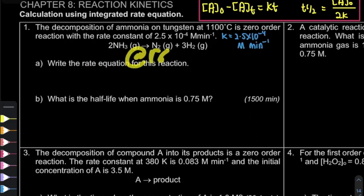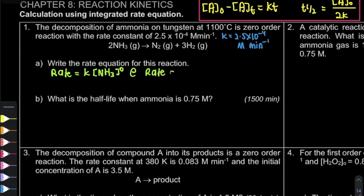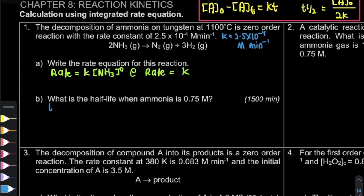Question A asks for the rate equation or rate law. Remember, it's actually a zero-order reaction, so the rate expression is rate = K (to the power of zero). For question B, they ask about the half-life when the concentration of ammonia is 0.75, and we know K is 2.5 × 10⁻⁴.